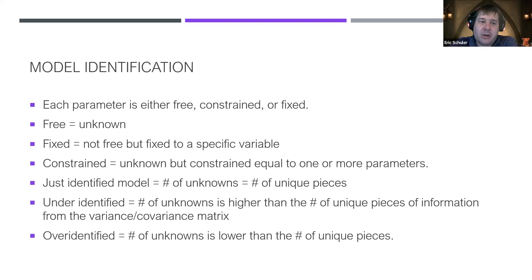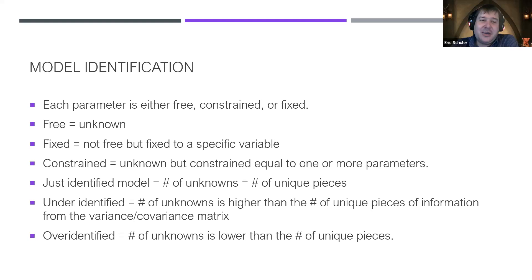Something you might hear with SEM is model identification — this is actually critical. We have to specify what is a free parameter, what's a constrained parameter, and what's fixed. Free is what's unknown — that's what we're trying to estimate. Fixed is specified to a specific value; for example, we can fix a loading to one to set a metric for the construct. That's going to sound like gibberish for those not familiar with CFAs or SEM, but I'm going to walk you through it with actual data.